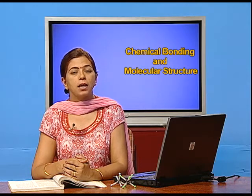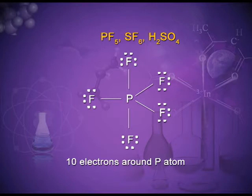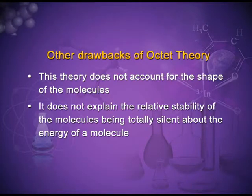Let us see the electron dot structures of these exceptions. In PF₅ — phosphorus pentafluoride — phosphorus is in the center surrounded by five fluorine atoms. You can count five covalent bonds around phosphorus, giving ten electrons in total. Other drawbacks of octet theory are that it does not account for the shape of molecules and does not explain the relative stability of molecules, being totally silent about the energy of a molecule.